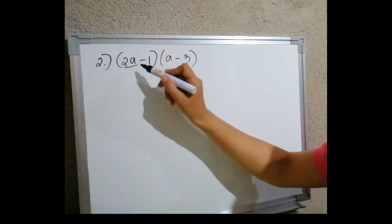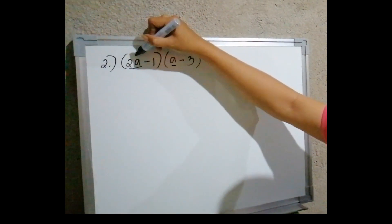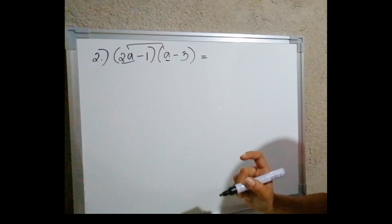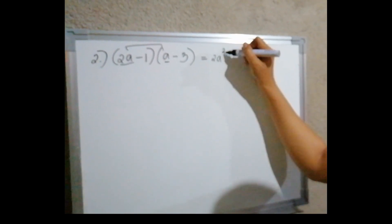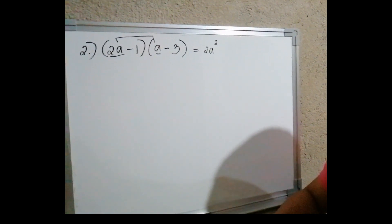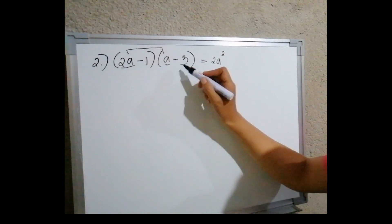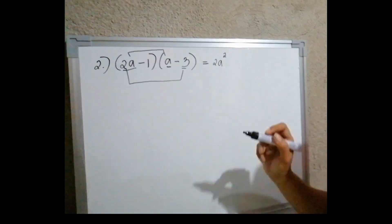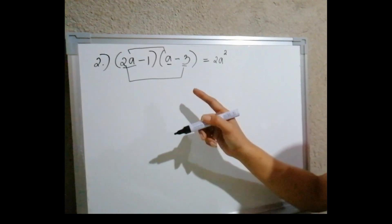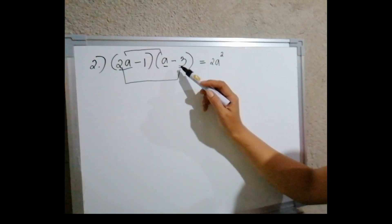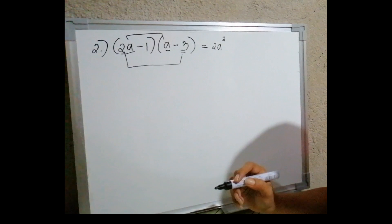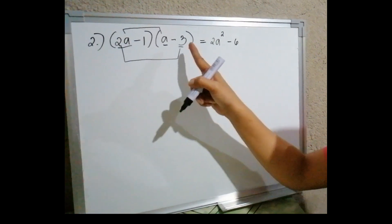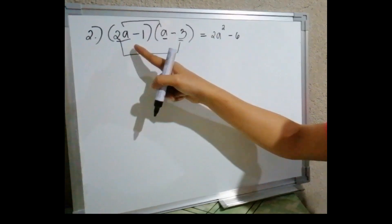For the first term, we have 2a times a, which is equal to 2a squared. For the outer term, we have 2a and negative 3. Since they have different signs, 2a times negative 3 is equal to negative 6a — because 3 times 2 is 6, and they have different signs so the result is negative, with variable a.